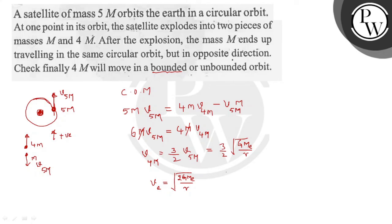So now what is v4m? v4m equals under root of 9 by 4 into GMₑ by r. Therefore, v4m is greater than vₑ.